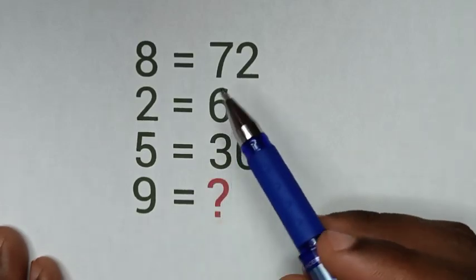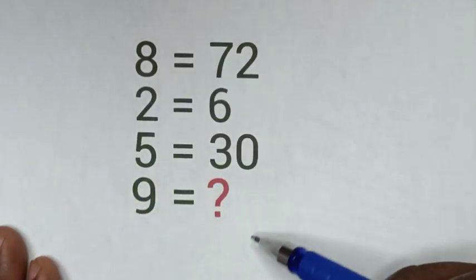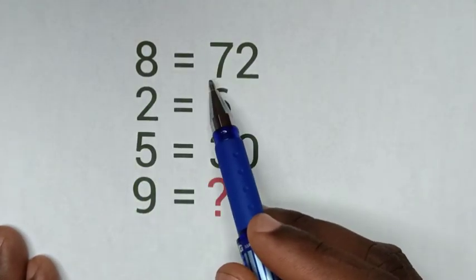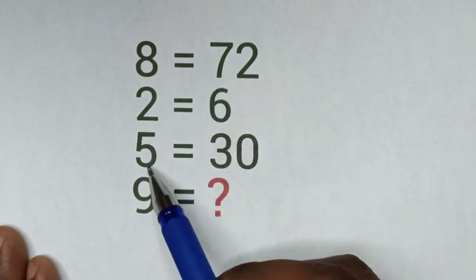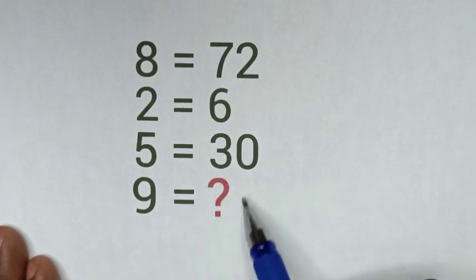Hello, you are welcome. Here's how to solve this logical reasoning problem: 8 equals 72, 2 equals 6, 5 equals 30, and 9 equals question mark.